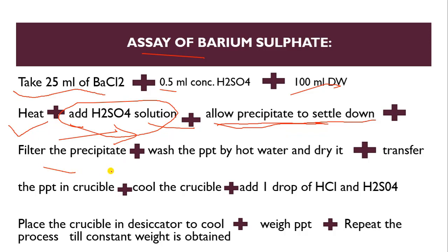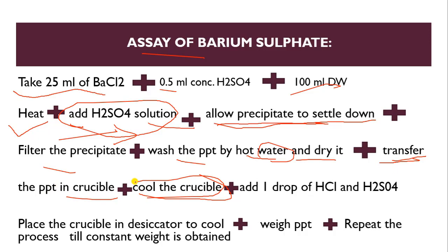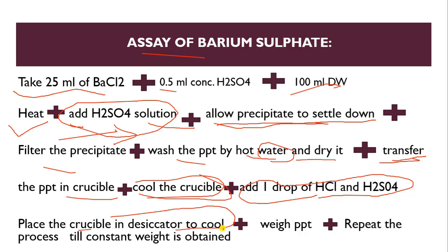After the precipitate forms, filter the precipitate. Wash the precipitate with hot water and dry it to remove the water. After drying, transfer the precipitate into a crucible and cool the crucible. Then add one drop of HCl and H₂SO₄ to purify the precipitate. Place the crucible in a desiccator to cool, so our hygroscopic substances are removed and only non-hygroscopic substance remains.